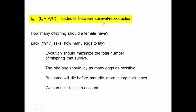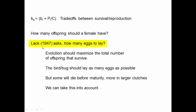We can actually see some of the tradeoffs between survival and reproduction — if that term is large, that might mean they're having fewer offspring. Another tradeoff to consider is how many offspring a female should have, in a more sophisticated manner. This question goes back to Lack in 1947, who asked the basic question: how many eggs should a female lay?